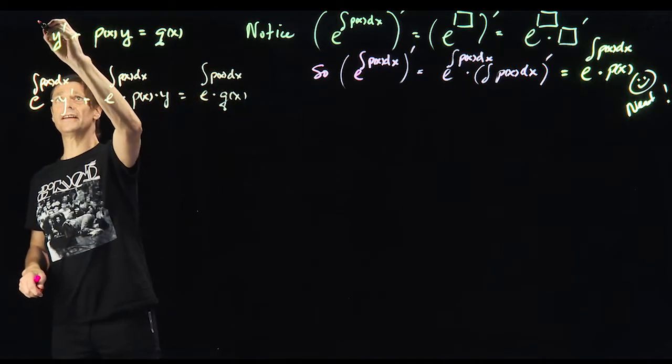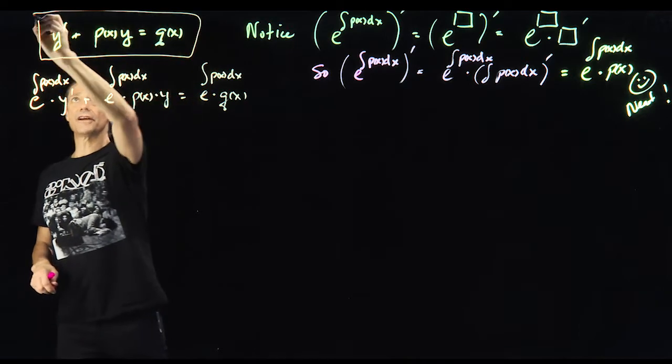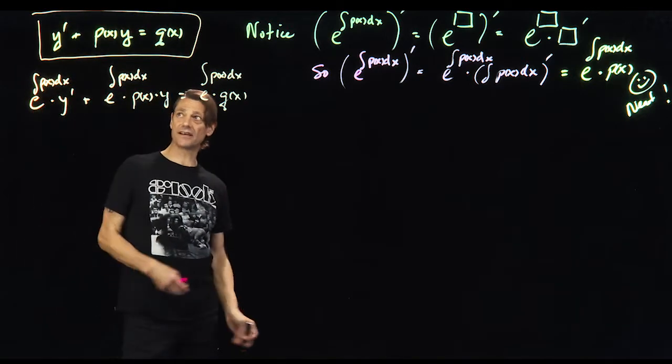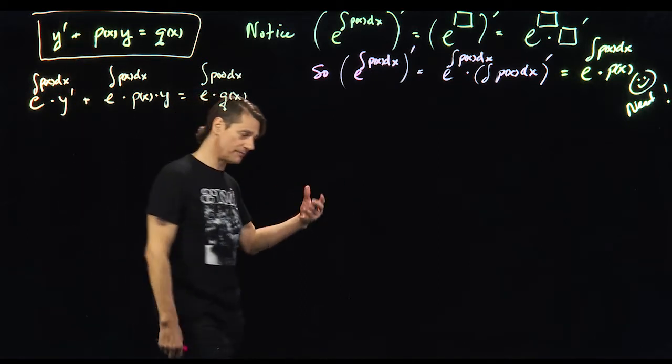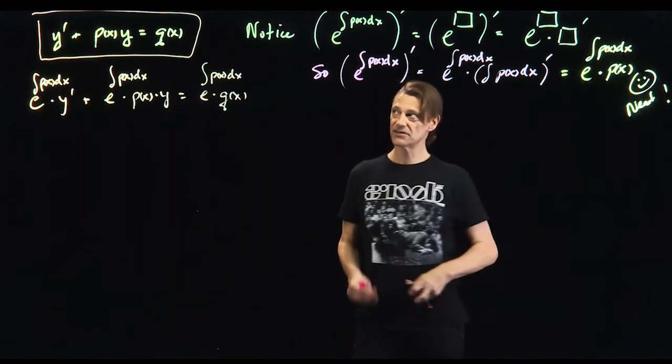So this is a lovely linear differential equation. It has degree, it's first order because there's only one derivative. Second order would be y double prime, that kind of thing. Simple stuff.